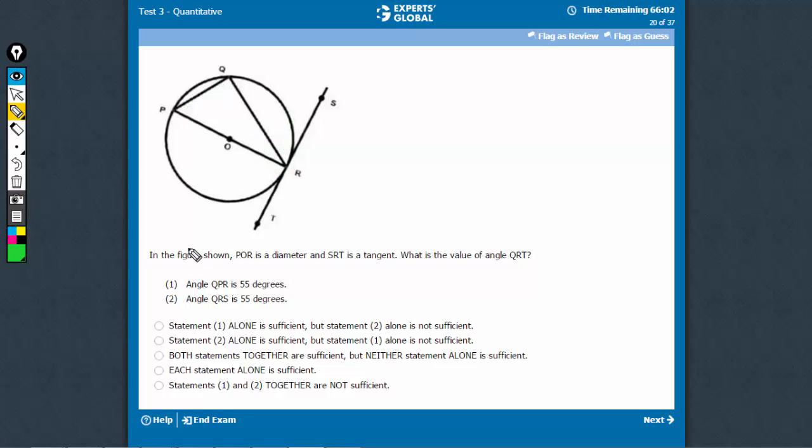Now, let's come to Statement 2. Statement 1 was wonderful. This says QRS is 55.